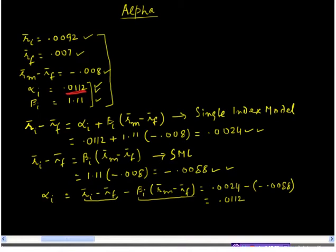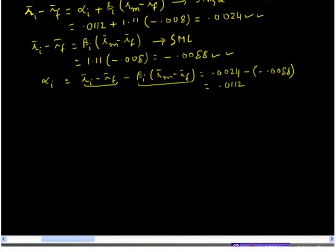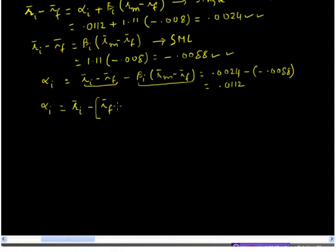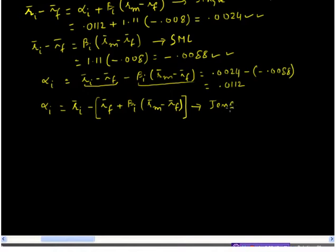While we have seen an alternative way to look at alpha, let us continue with this equation and rearrange it slightly. Alpha of i can also be written as RI bar minus RF bar plus beta of i times RM bar minus RF bar, putting the remaining terms inside a bracket. Written this way, we have what is known in the books as Jensen's alpha.